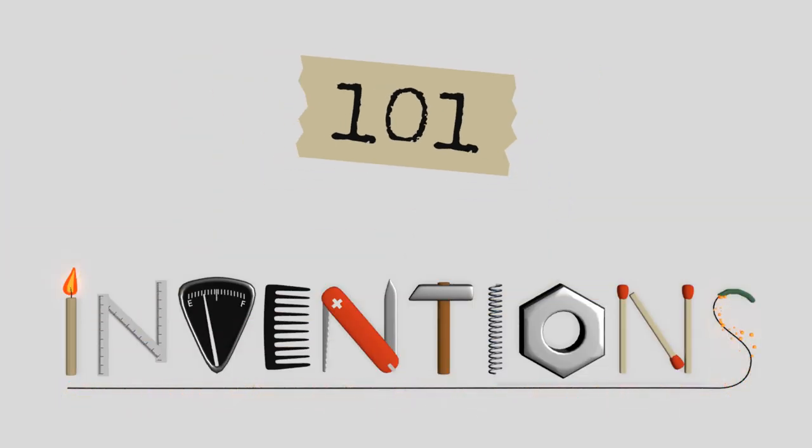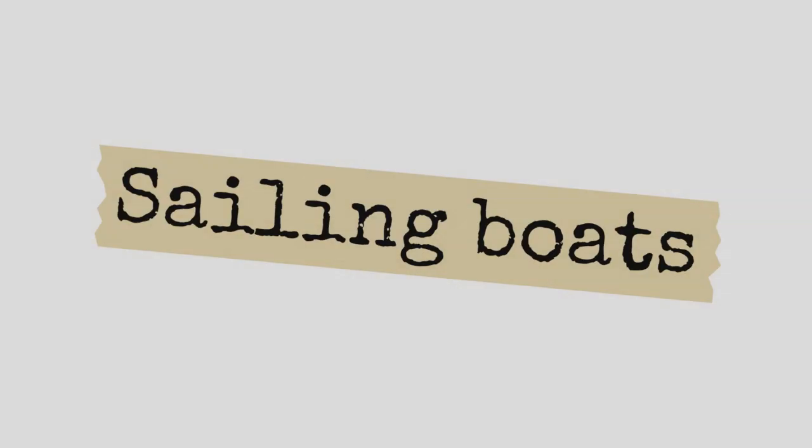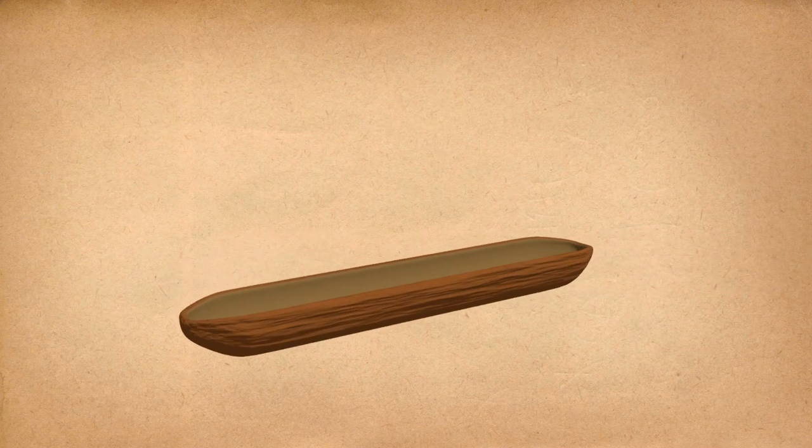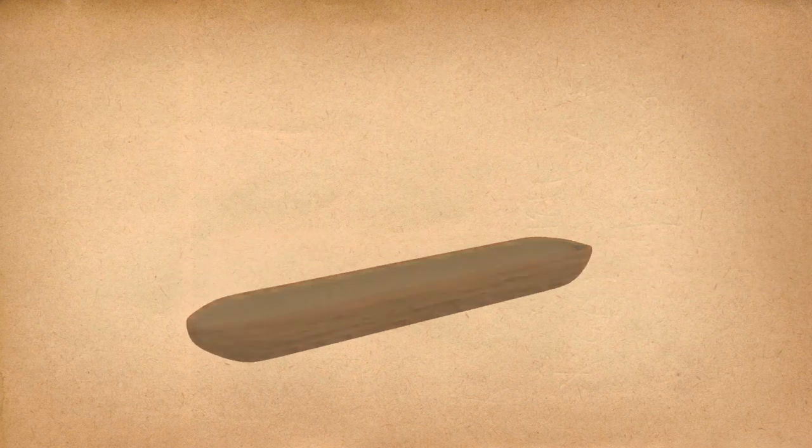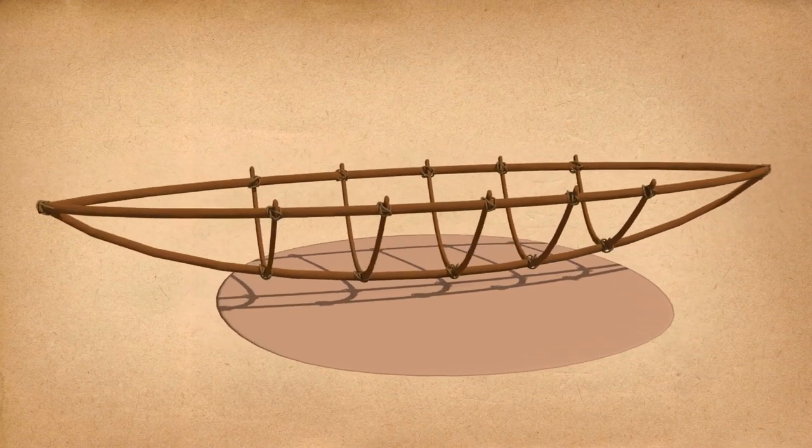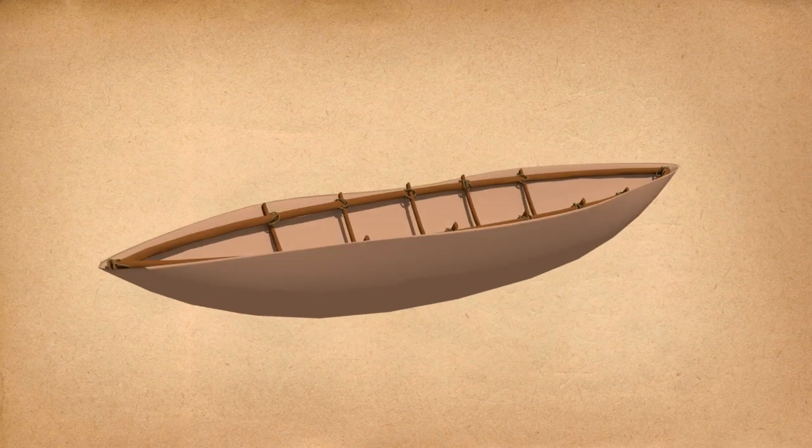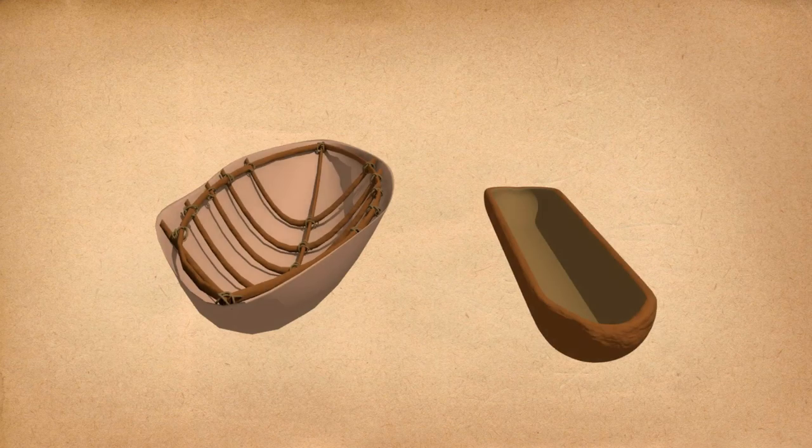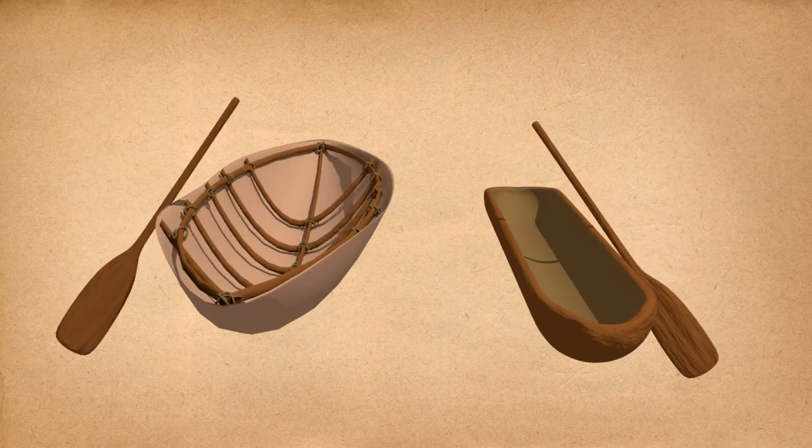101 Inventions: Sailing Boats. First vessels were simple, hollowed out of tree trunks or made out of skin stretched on a wooden frame, or rafts. They were put in motion with the help of oars.